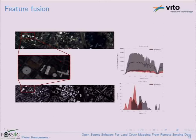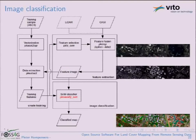Adding height information helps distinguish residential from commercial areas. Most residential buildings are up to 20–25 meters tall, whereas commercial buildings start from 20 meters. The classification workflow involves overlaying training vectors on both images, training the classifier with the combined spectral and height features, then feeding the full imagery through the classifier to obtain the final classification output.